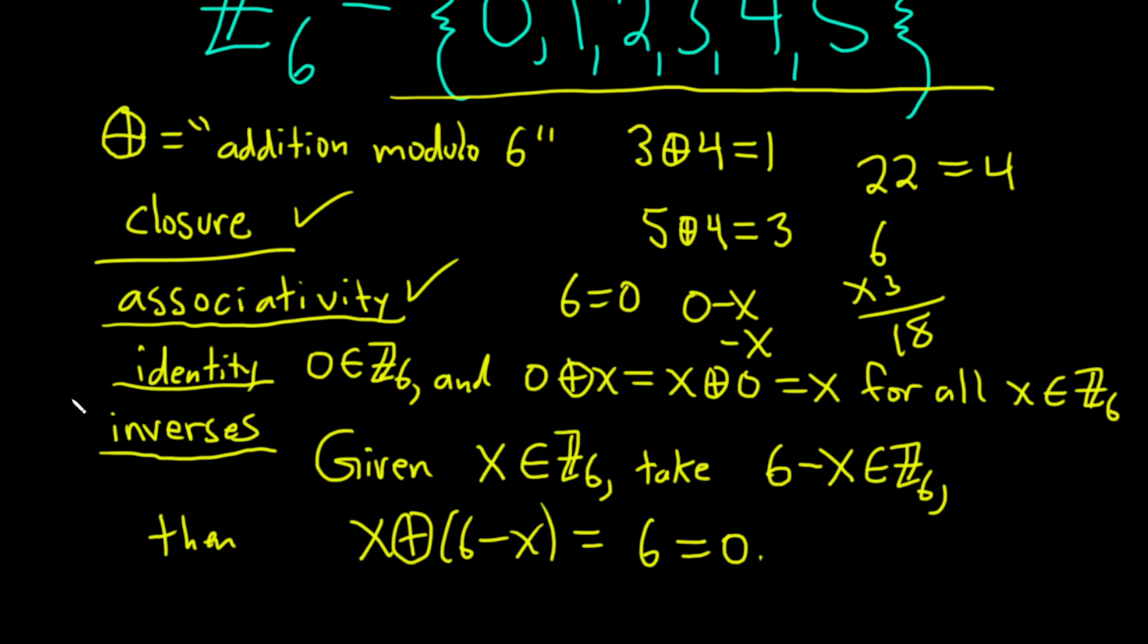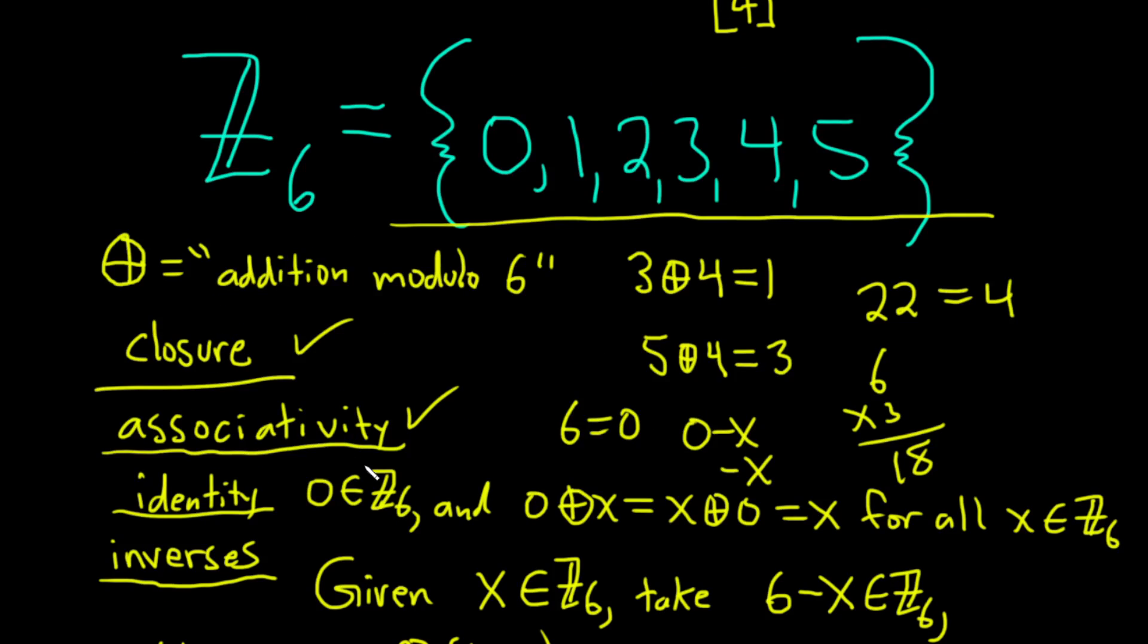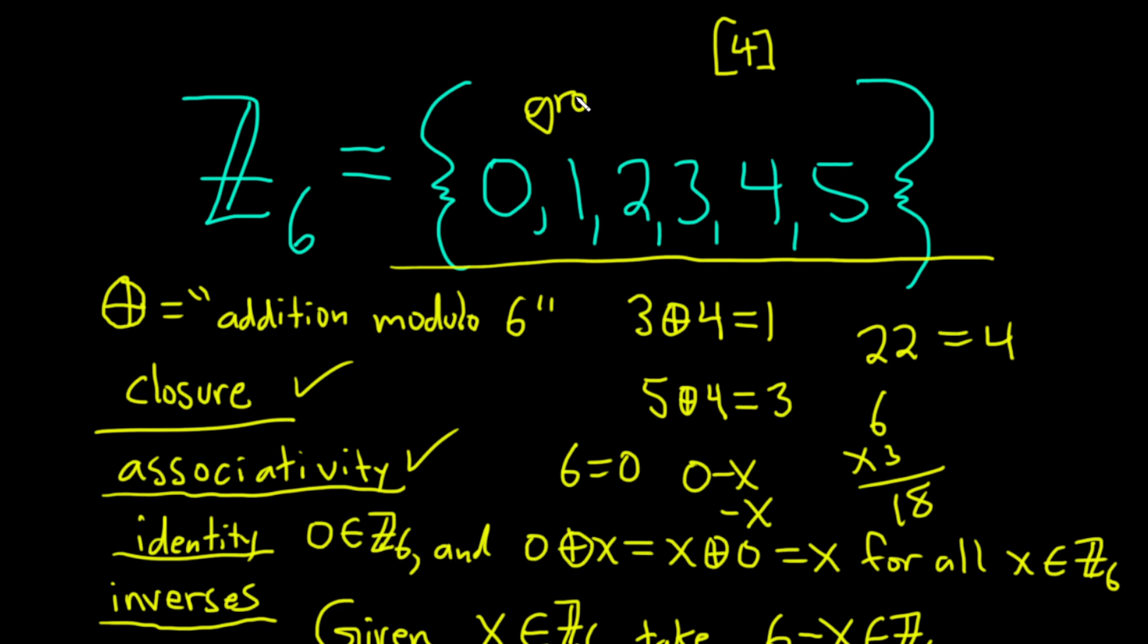So we have inverses. We have identity. We have inverses. We have associativity. And we have this beautiful set. So we have a group. So kind of cool. Just thought I would show you this interesting group.